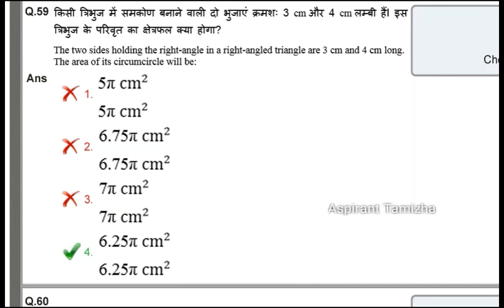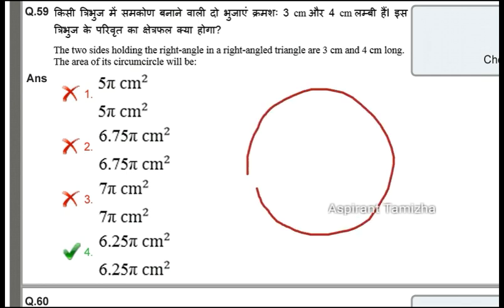The next question: the two sides holding the right angle in a right angle triangle are 3 centimeters and 4 centimeters long. The area of the circumcircle will be — let's work with this right angle triangle.